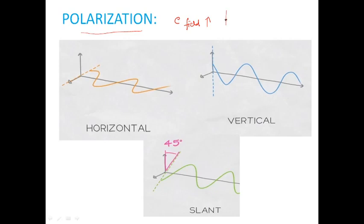One point we have to keep in mind is that the direction of orientation should be considered for at least one complete cycle. For example, in one part of the cycle it is oriented one way, and if it is changing in another part, we cannot consider that for polarization. That's why, for at least one complete cycle, the direction of the field component should be maintained — that we can define as polarization, or orientation of the electromagnetic field component.